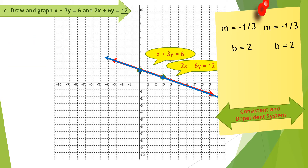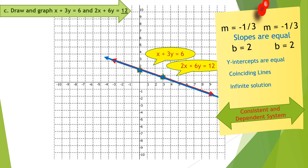Let us define this type of system of linear equation. If you notice, the slopes are equal, the y-intercepts are also equal, and these two lines coincide. This is what we call coinciding lines. Since they coincide, there are lots of points common to them, so the solution of this system is infinite.